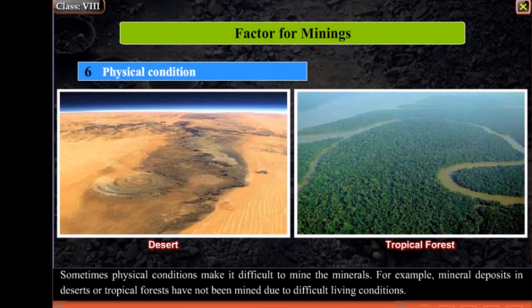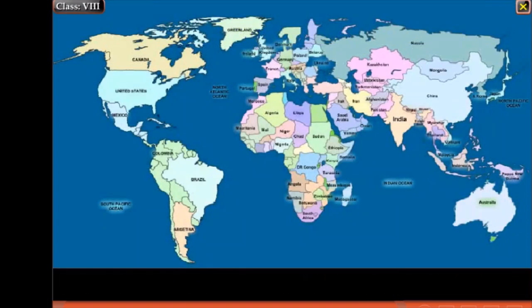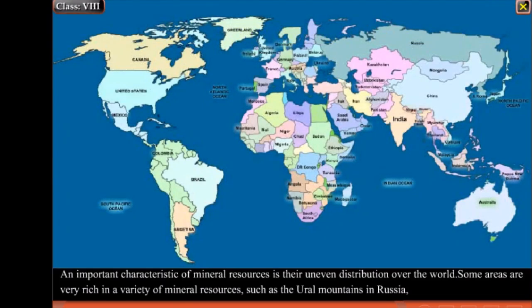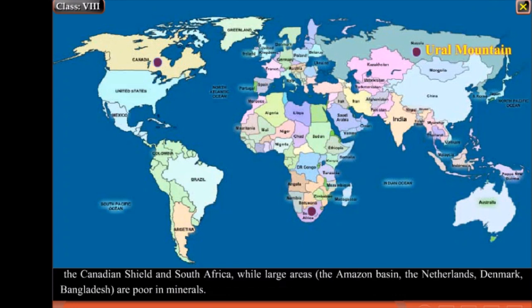Sometimes physical conditions make it difficult to mine minerals. For example, mineral deposits in deserts or tropical forests have not been mined due to difficult living conditions. An important characteristic of mineral resources is their uneven distribution over the world. Some areas are very rich in a variety of mineral resources, such as the Ural Mountains in Russia, the Canadian Shield and South Africa, while large areas like the Amazon Basin, the Netherlands, Denmark and Bangladesh are poor in minerals.